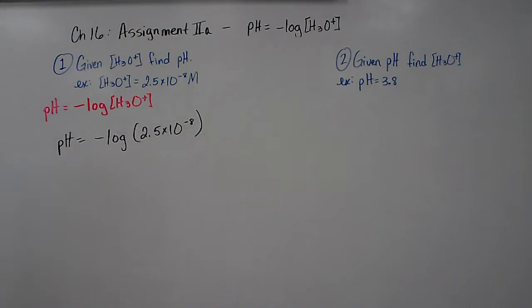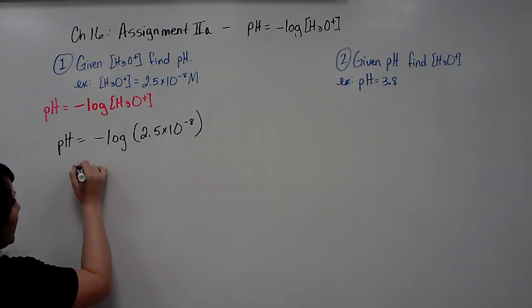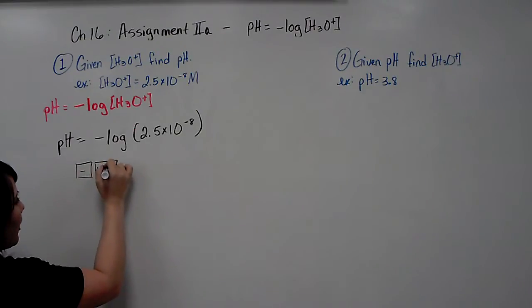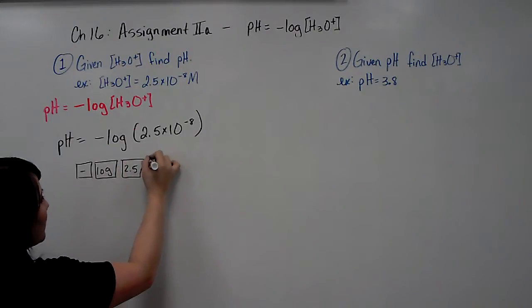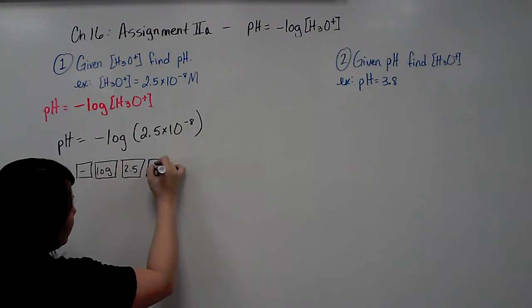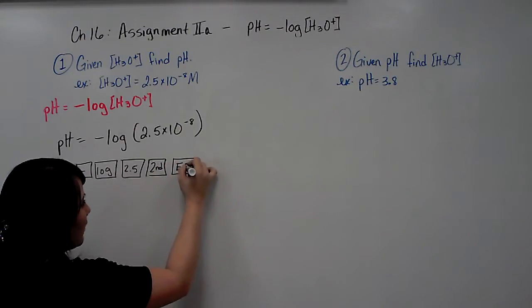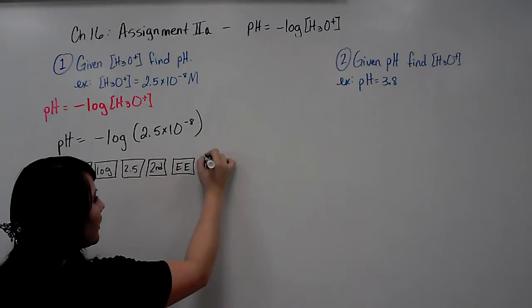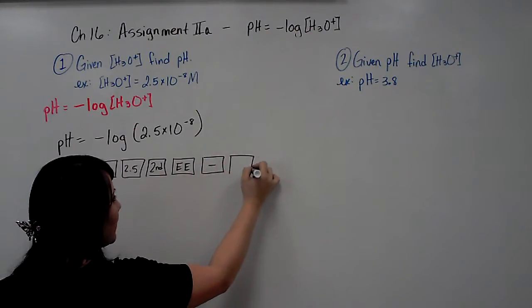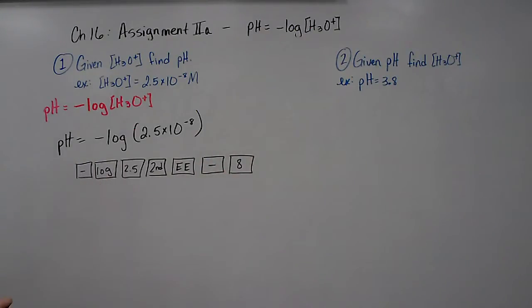And I'm going to put for you exactly what buttons you would want to push in your calculator. You would literally press negative, the log button, 2.5, and then you want to hit second or shift EE or just hit your E button, negative, and then 8.